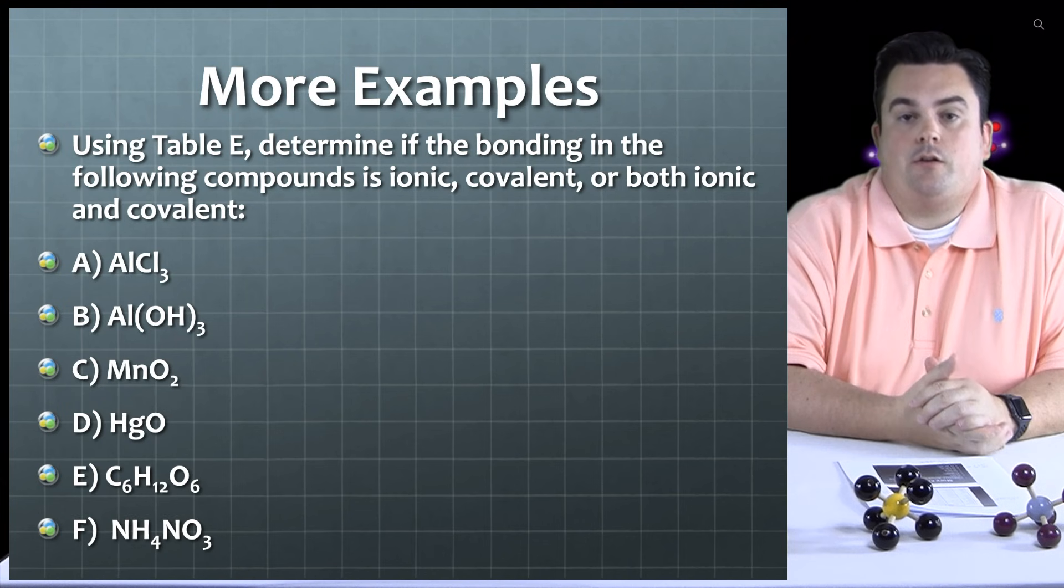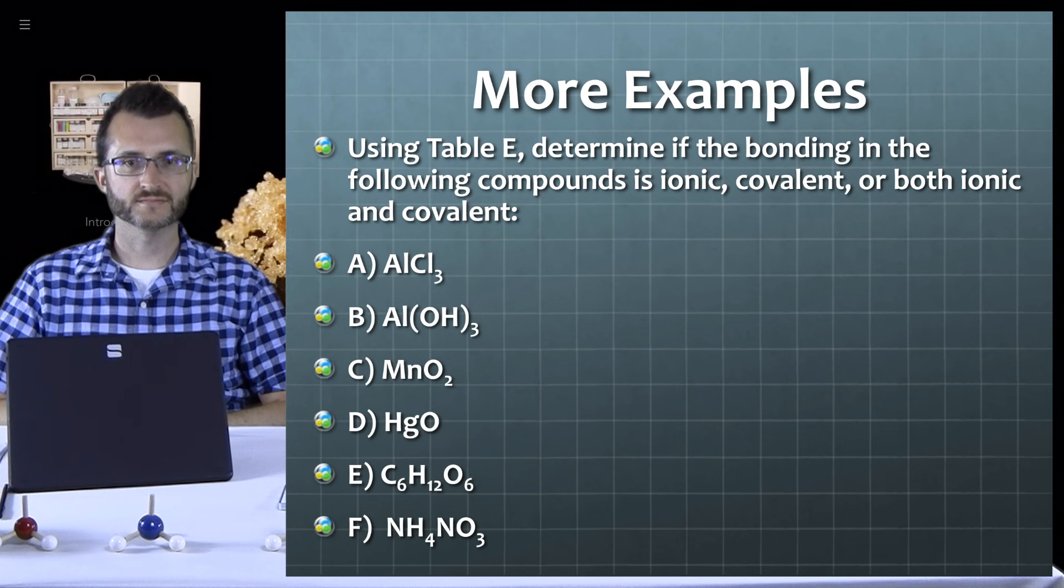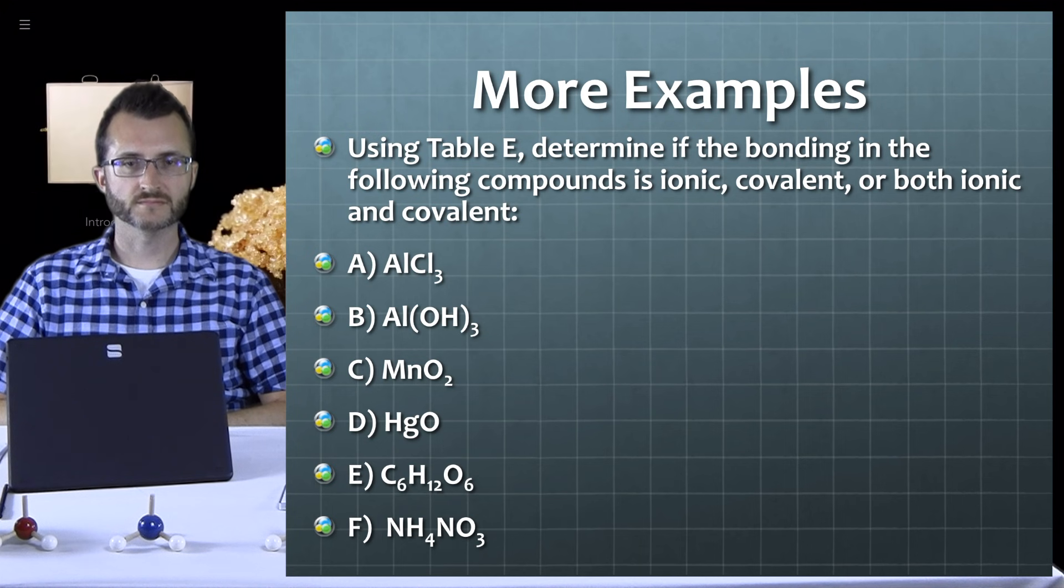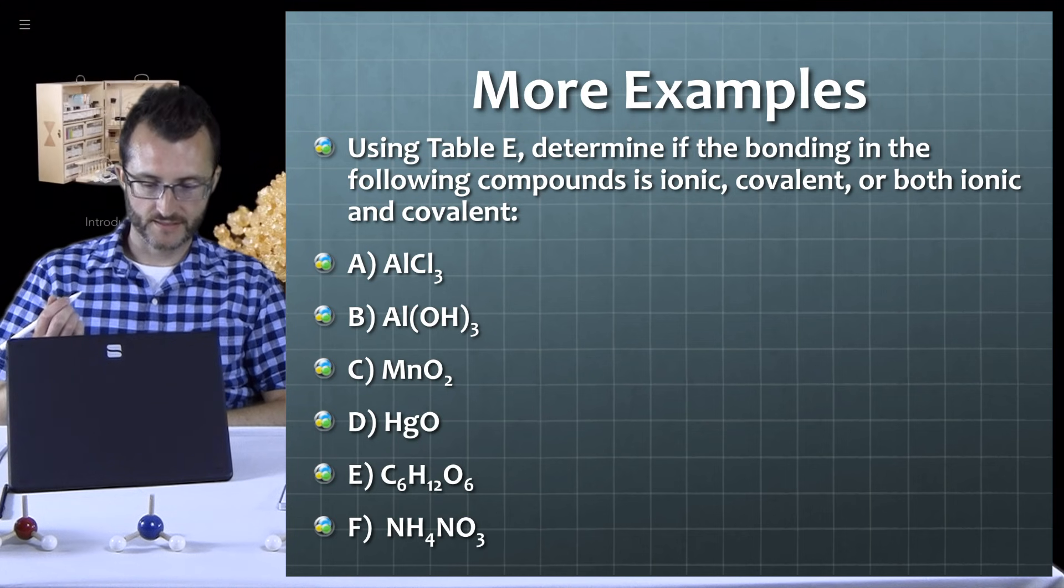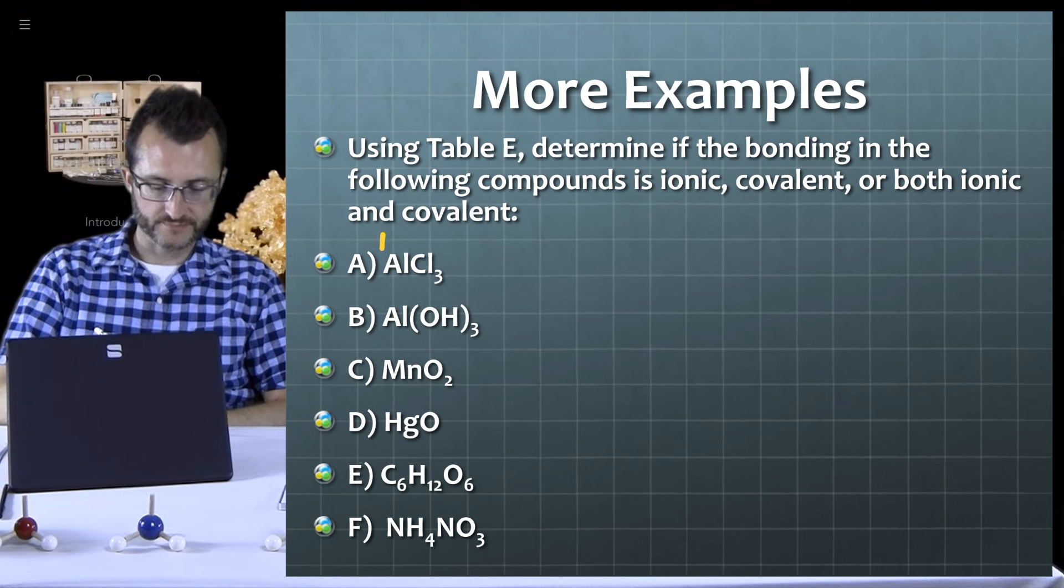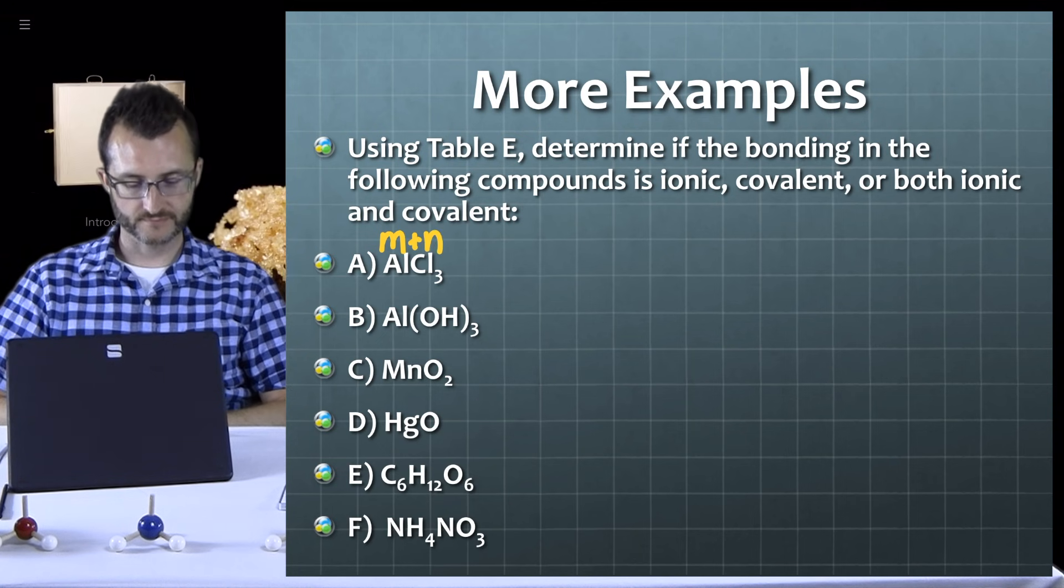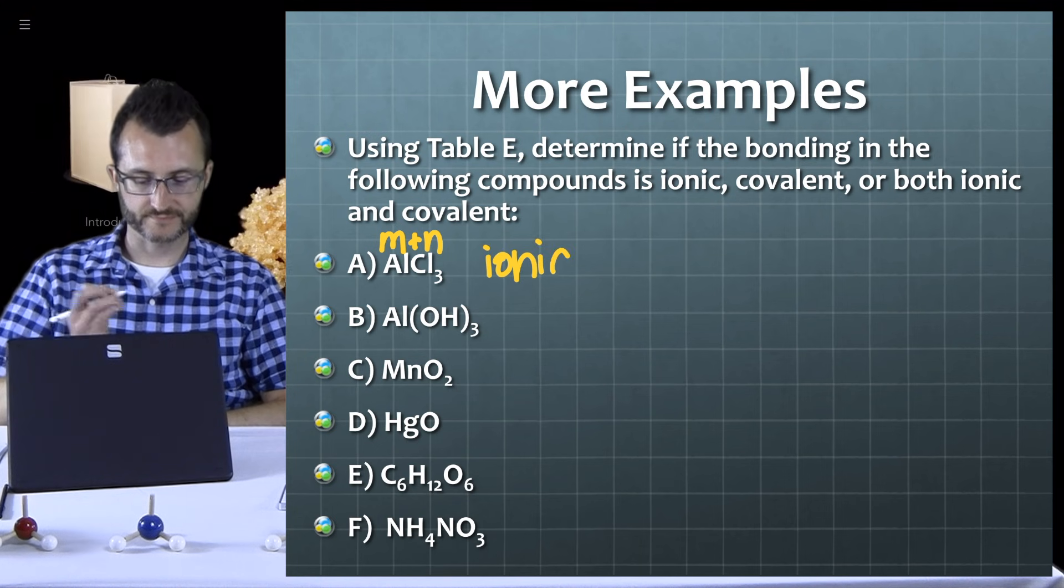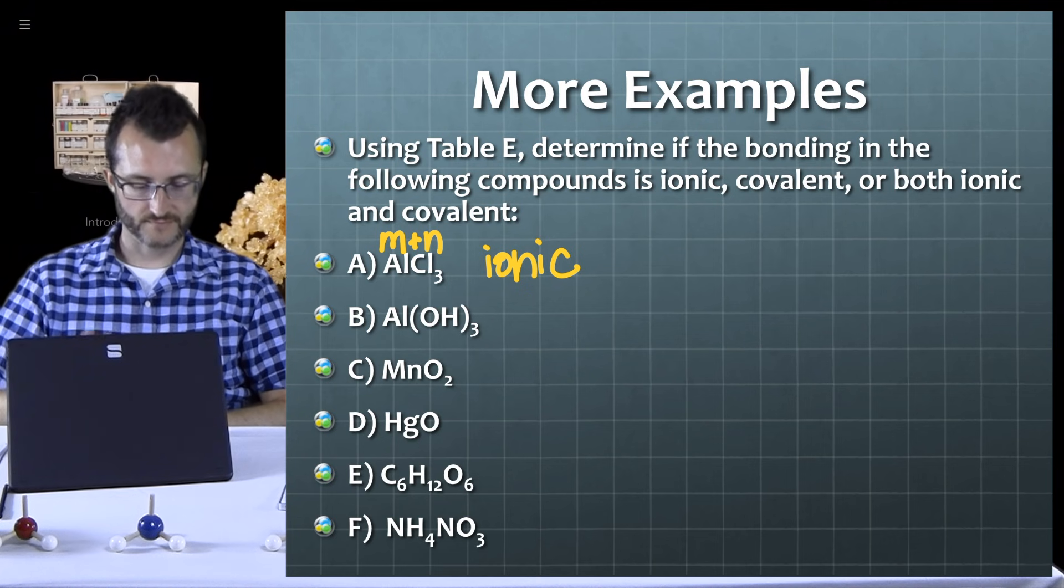Alright, so we're going to do some more examples here. Schu, are you ready? Yes. Alright, so using table E, determine if the bonding in the following compounds is ionic, covalent, or both ionic and covalent. So our first example here is AlCl3. So our first element, Al, what kind of element do we have here? That would be a metal. Good. What about Cl? Definitely a non-metal. So based on those two labels, what kind of bonding do we have here? So metal and non-metal has to be ionic. Perfect.